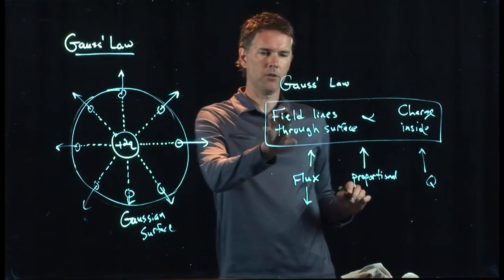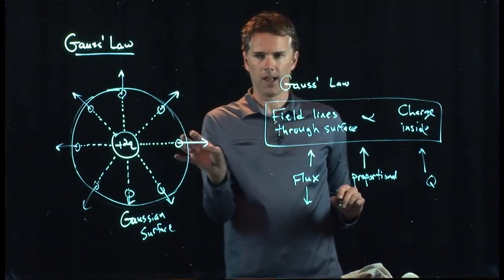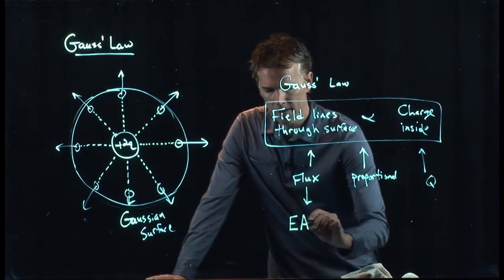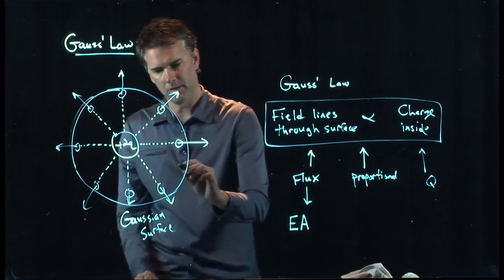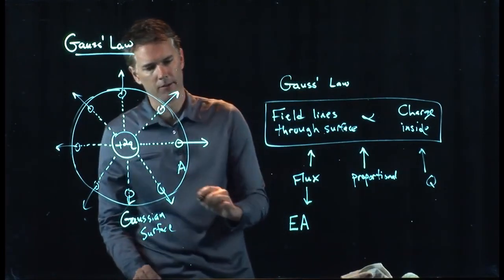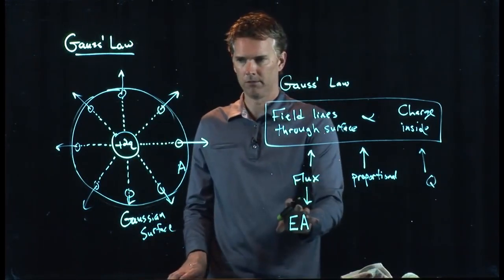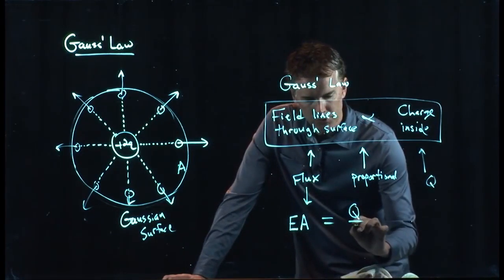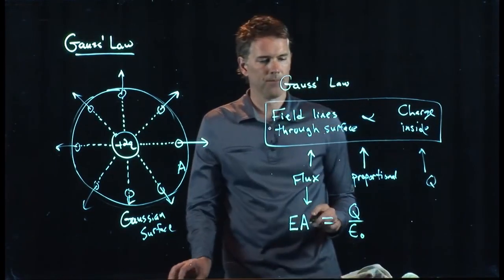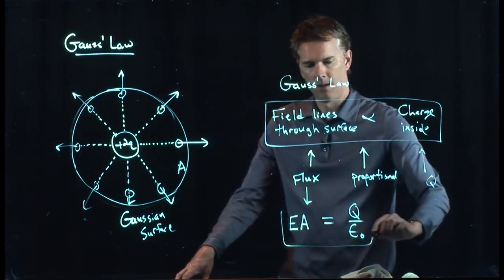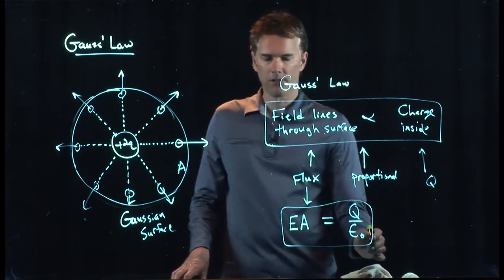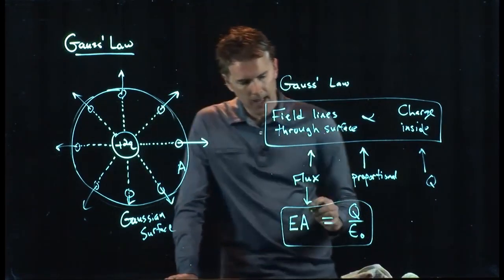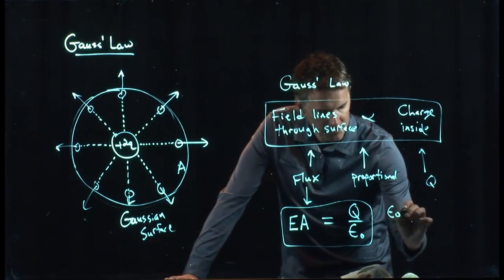But electric field lines is not flux. If I multiply it by the area of the surface, there's some area A of that surface, that is flux. That is flux, and that is equal to q over epsilon naught, where epsilon naught is our proportionality constant. It's proportional to q over epsilon naught. Epsilon naught is called the permittivity of free space.